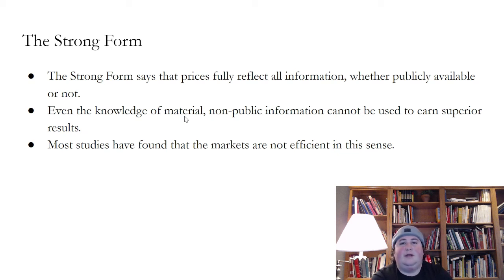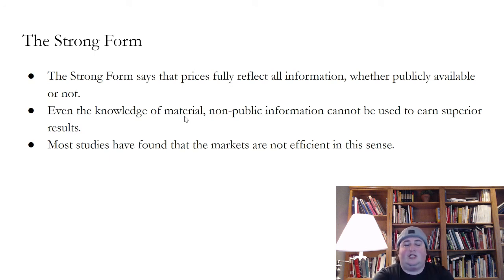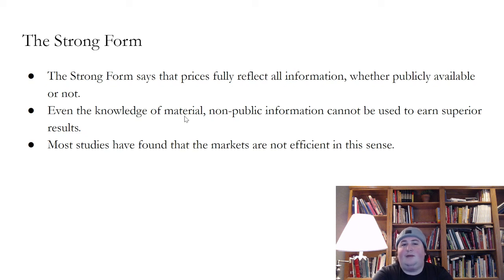The strong form likely doesn't hold. As a result, markets are efficient in many cases, but there are limits to arbitrage. There is information that is limited from getting into prices. Some of that is the cost of collecting the information, the cost of processing the information, and laws that prevent people from trading on the information and putting it into prices. Limits to arbitrage are a critical piece that prevents information from getting into prices.